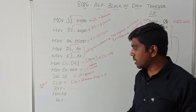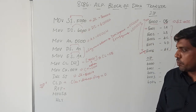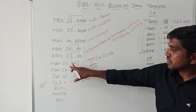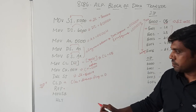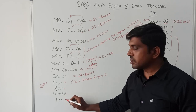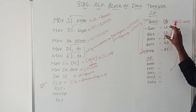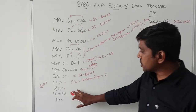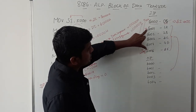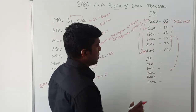The next instruction is REP MOVSB. REP is a loop instruction that runs until the CL value goes to 0. MOVSB means move string byte — it transfers a string byte at a time. After execution of this instruction, the source string byte values are transferred one by one to the destination.